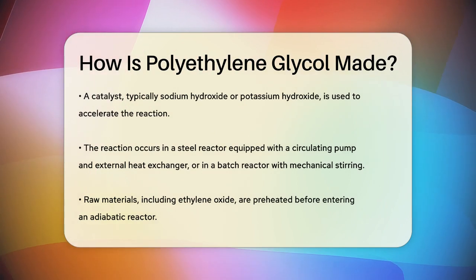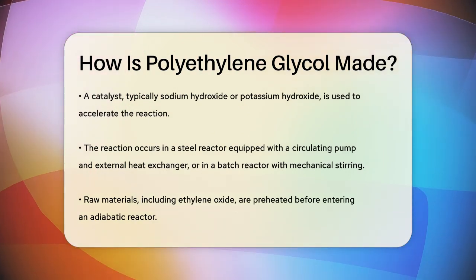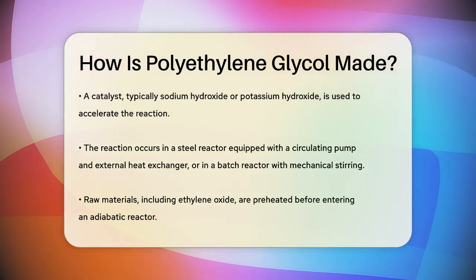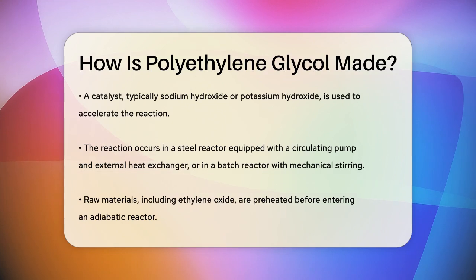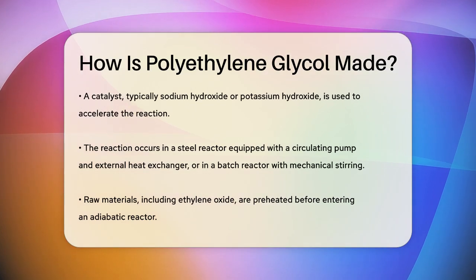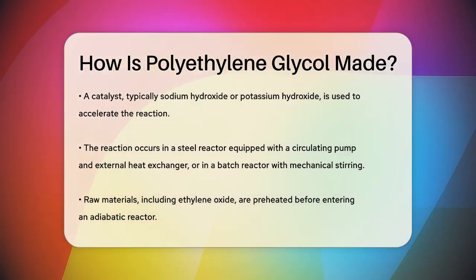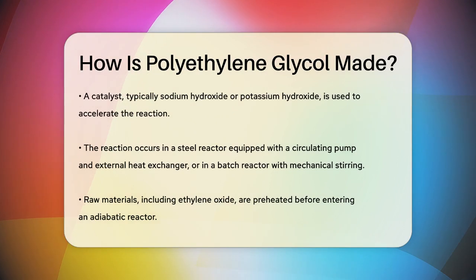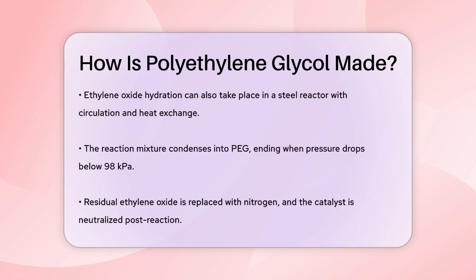Here's a closer look. The raw materials, including ethylene oxide, are preheated and then enter an adiabatic reactor. The hydration of ethylene oxide can also be done in a steel reactor with a circulation pump and heat exchanger. During the reaction, the mixture gradually condenses into PEG. The reaction ends when the pressure drops below 98 kPa.